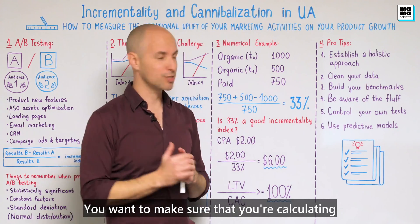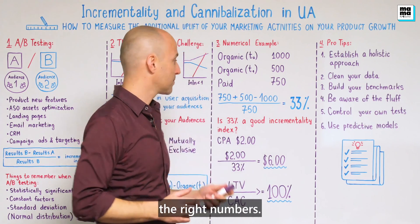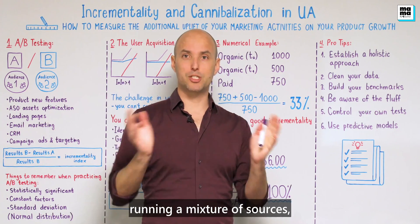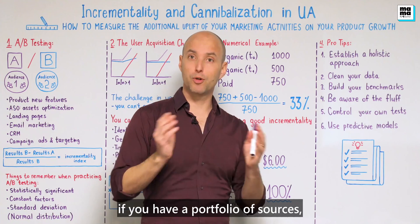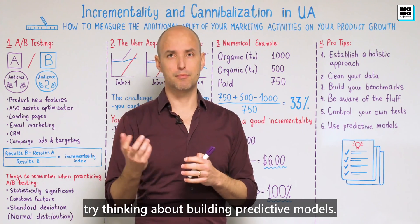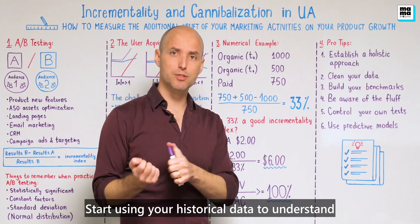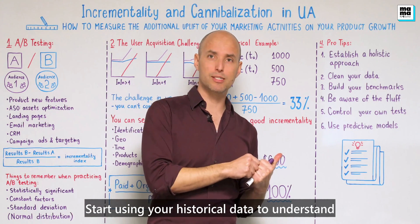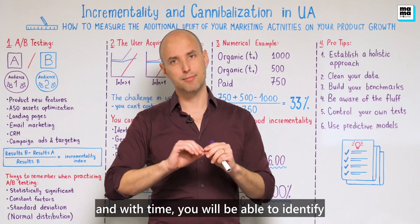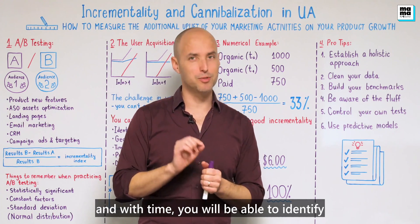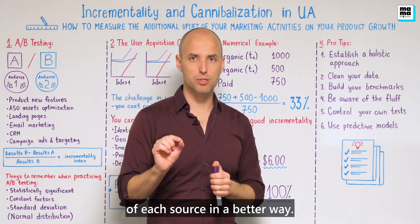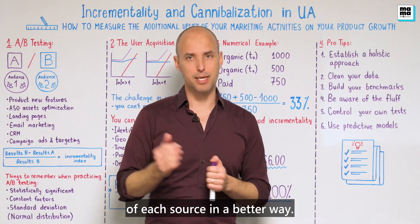Sixth: if you are running a mixture of sources and have a portfolio of sources, try thinking about building predictive models. Use your historical data to understand the contribution of each marketing source to your growth, and over time you will be able to identify the individual contribution of each source in a better way.